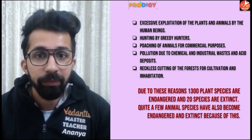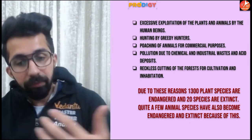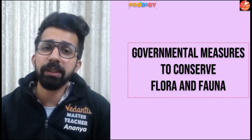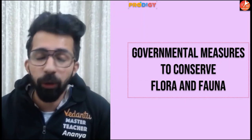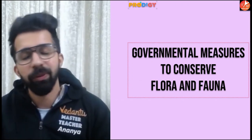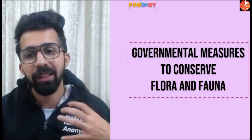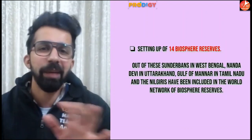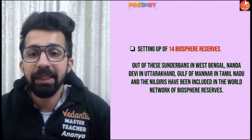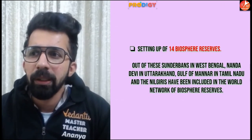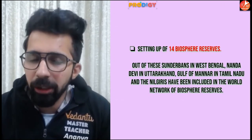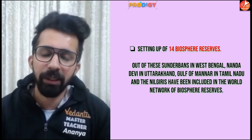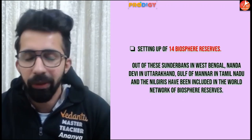The numbers of species are reducing, and it's very important that serious steps are taken to conserve flora and fauna. Flora refers to plant species and fauna refers to animal species. The government of India has set up 14 biosphere reserves as per the NCERT, though the updated figure is 18. You should use 14 as stated in your NCERT textbook.